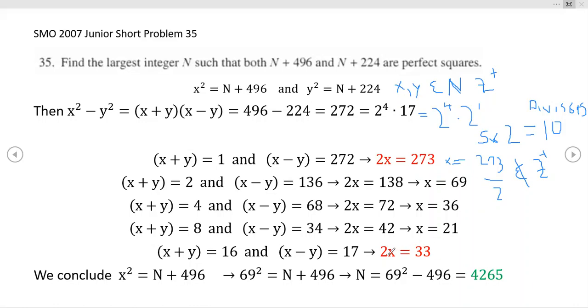Down here, we can't do this because you would have an answer that's not a natural number. You can see the trend is going to get smaller and smaller. So 69 is the largest value of x, but we know that x squared is equal to N plus 496.